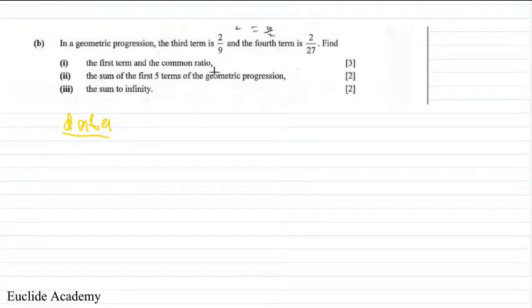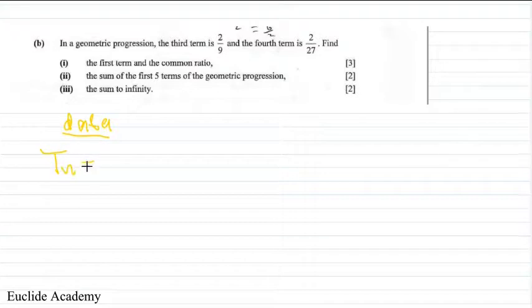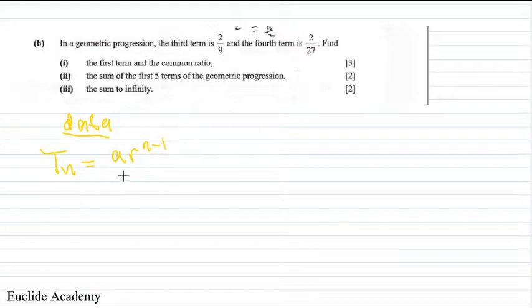We want to find the first term and the common ratio. Remember that in a geometric progression, the nth term equals the first term (a) multiplied by the common ratio (r) to the power of n minus one: Tₙ = a · rⁿ⁻¹. That is the formula we will use.